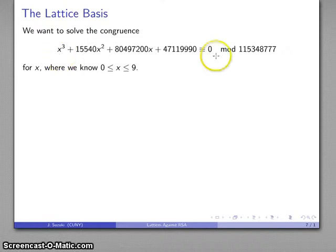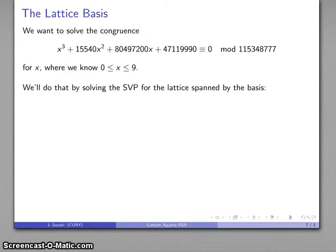So I have my congruence. I know that x has a maximum possible value of 9. I know the modulus. So what can I do here? Well, I'll take a look at the lattice that corresponds to this congruence.